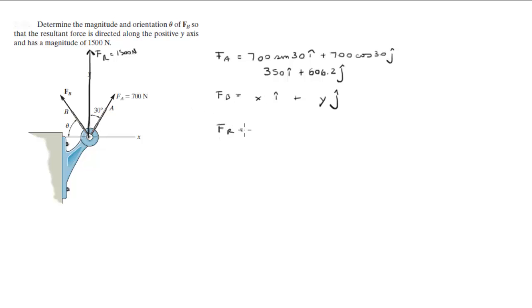And F of R is equal to 0 i, because it's straight up in the y-axis, plus 1500 j.